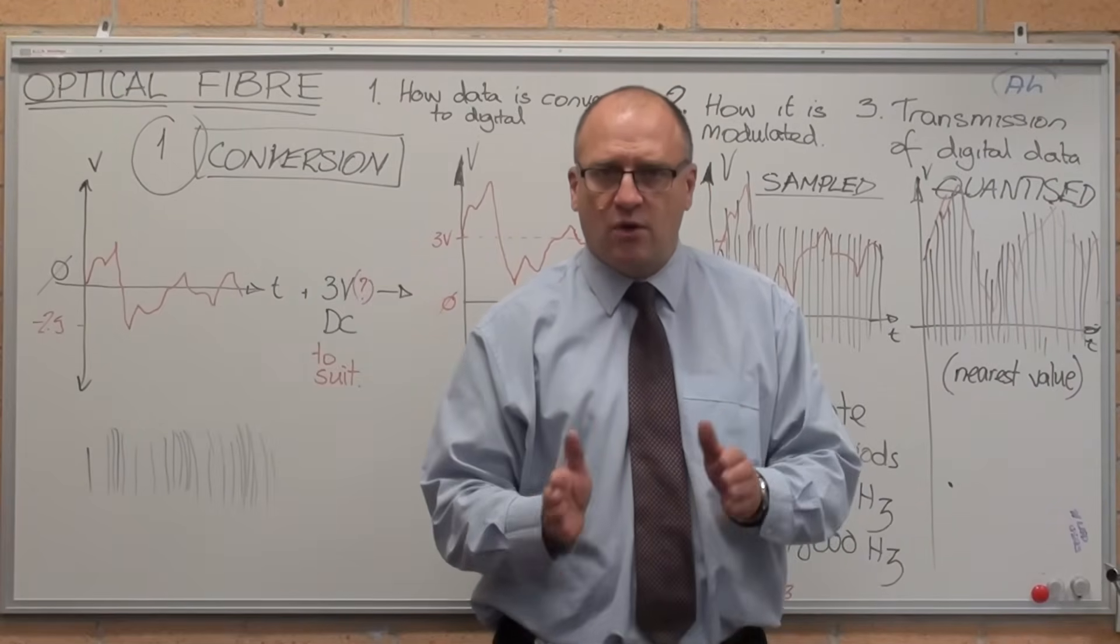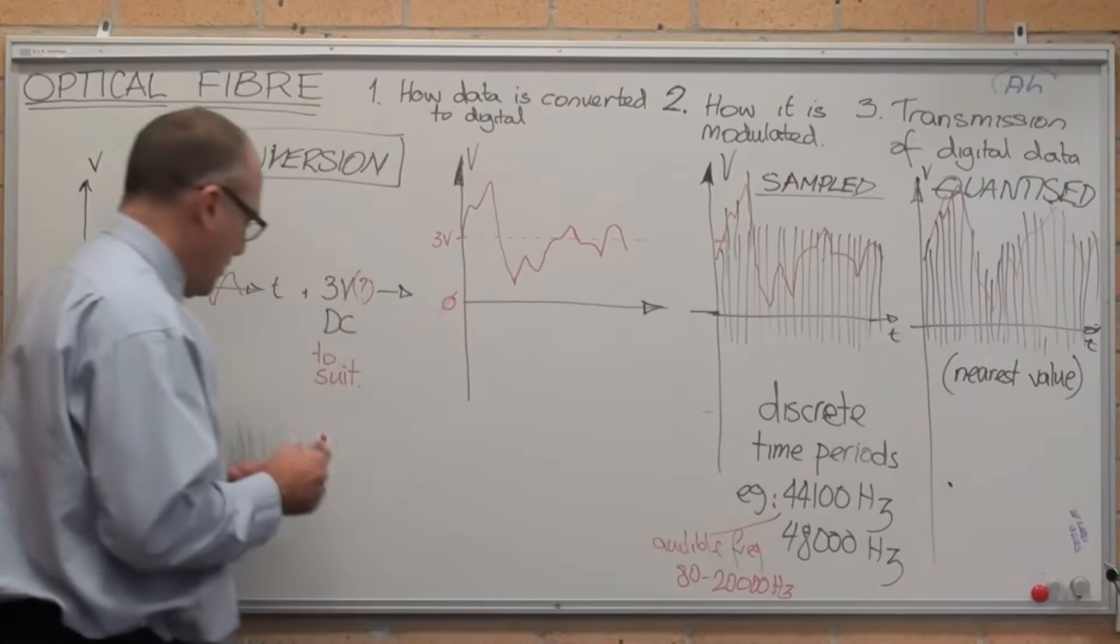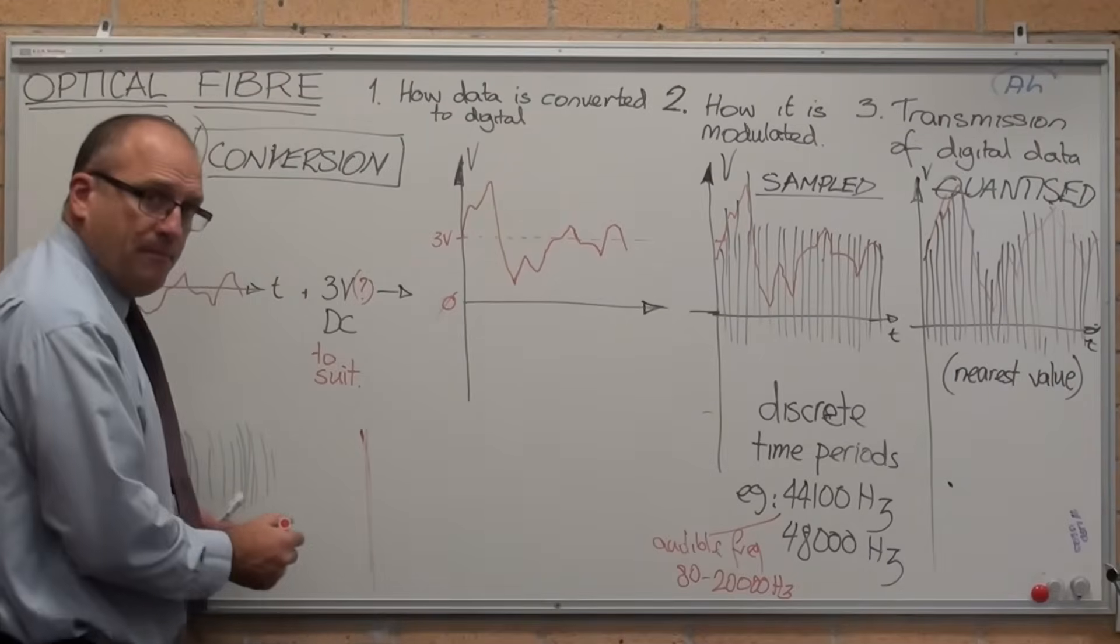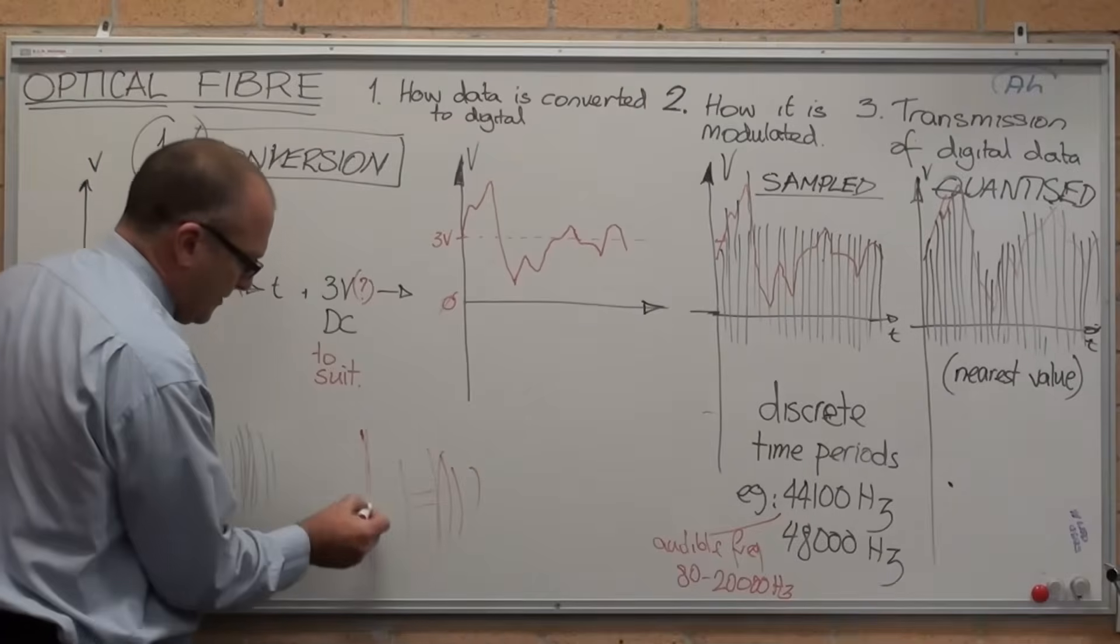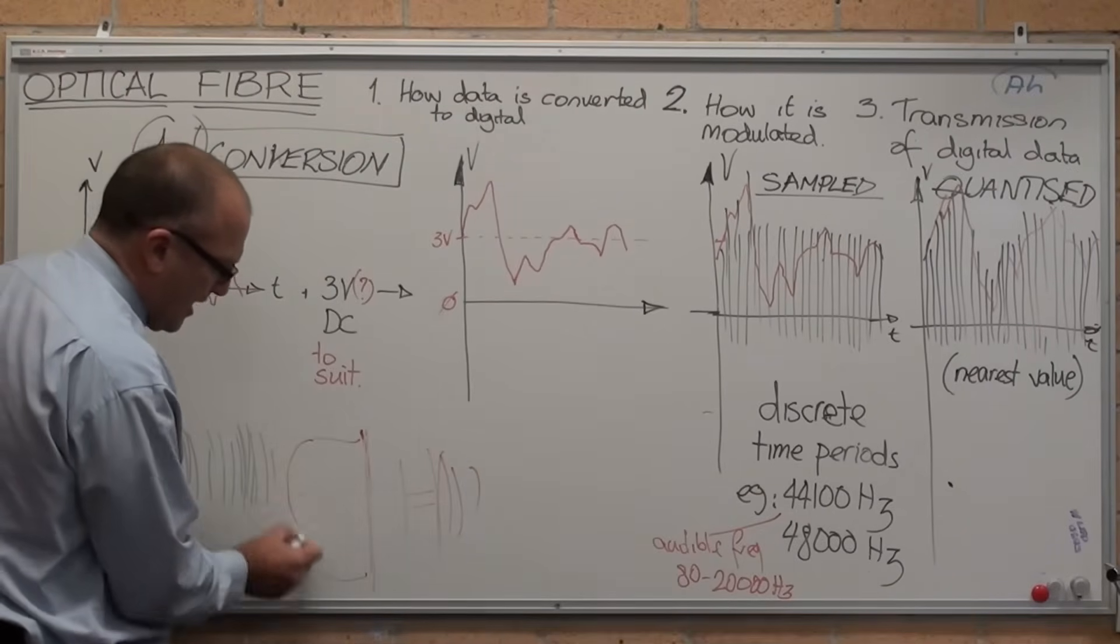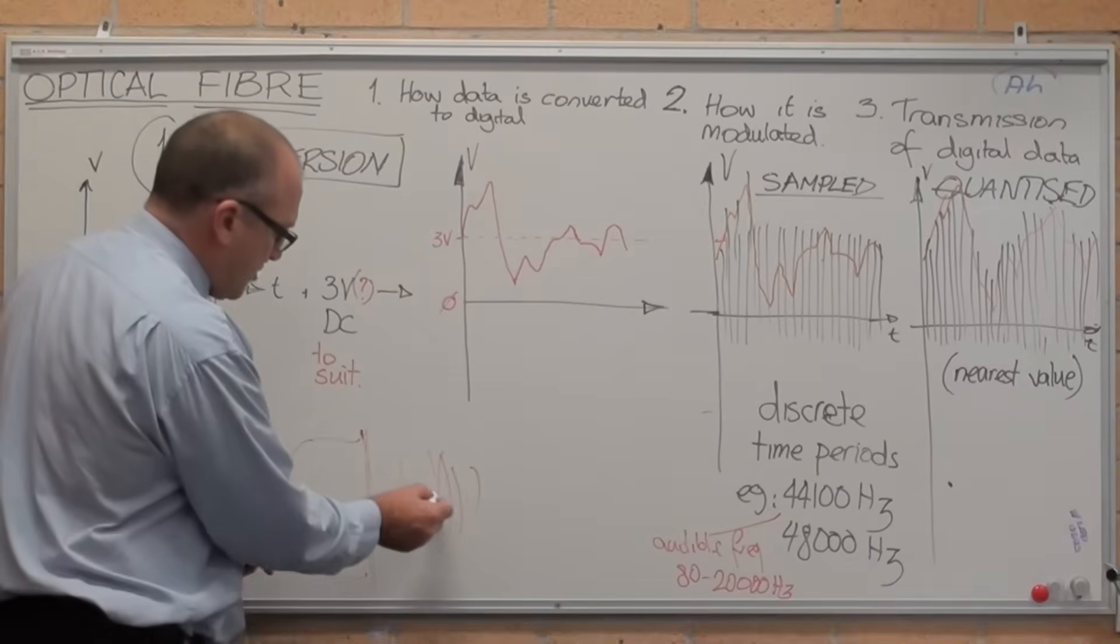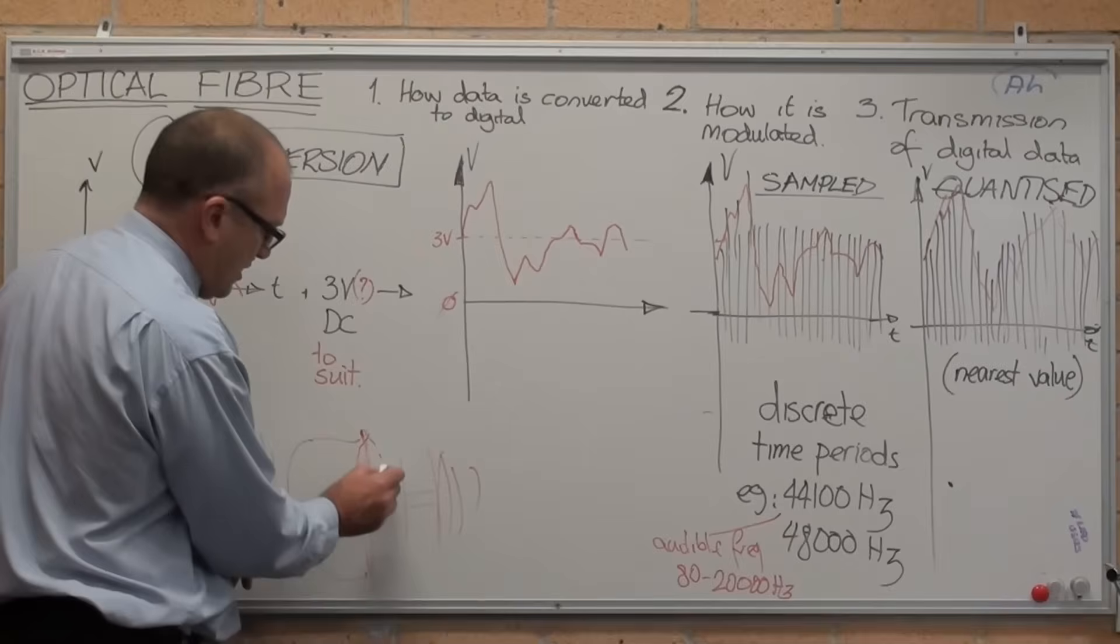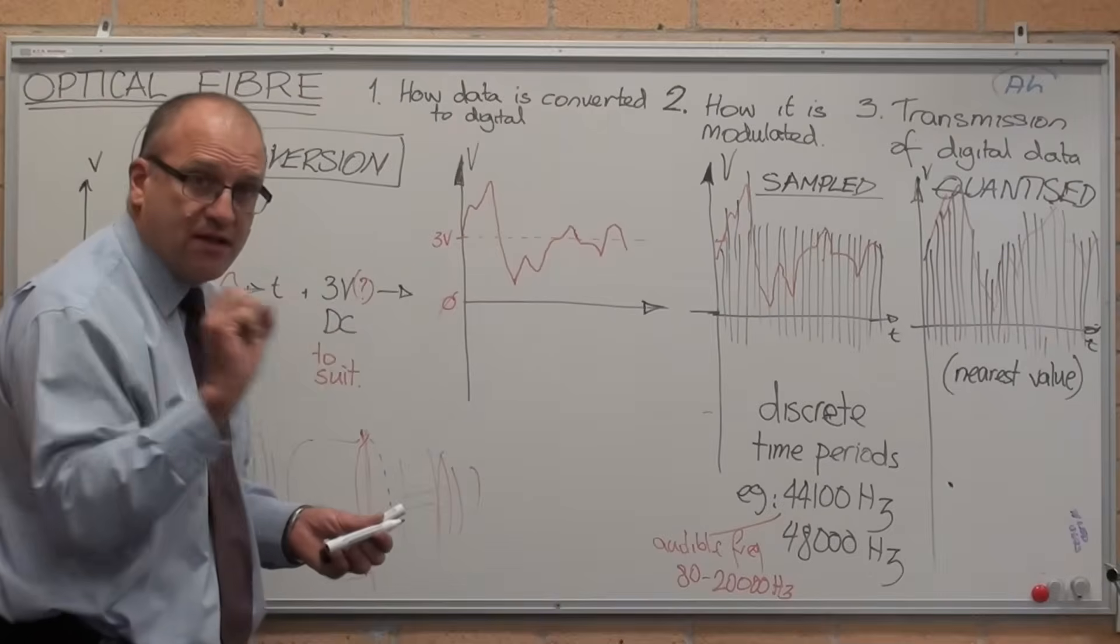The microphone works exactly like your human ear. Your human ear has an eardrum with sound waves or pressure waves hitting it. Because there's a sealed cavity behind your eardrum, as the pressure pushes, it pushes the eardrum in. When you hit low pressure, it sucks the eardrum out and vibrates it.